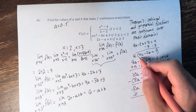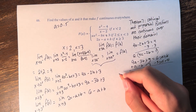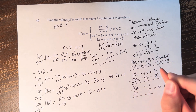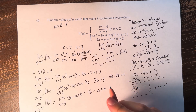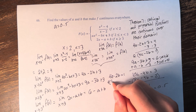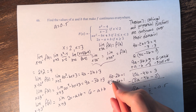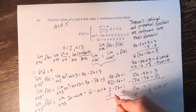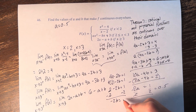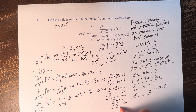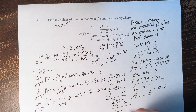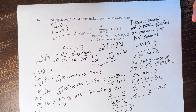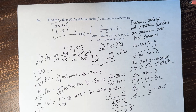Using 4a minus 2b equals 1 and substituting a equals 1 half: 4 times 1 half minus 2b equals 1, so 2 minus 2b equals 1. Subtracting 2 gives negative 2b equals negative 1, and dividing by negative 2 gives b equals 1 half. So the values of a and b that make the function continuous everywhere are both equal to 1 half.